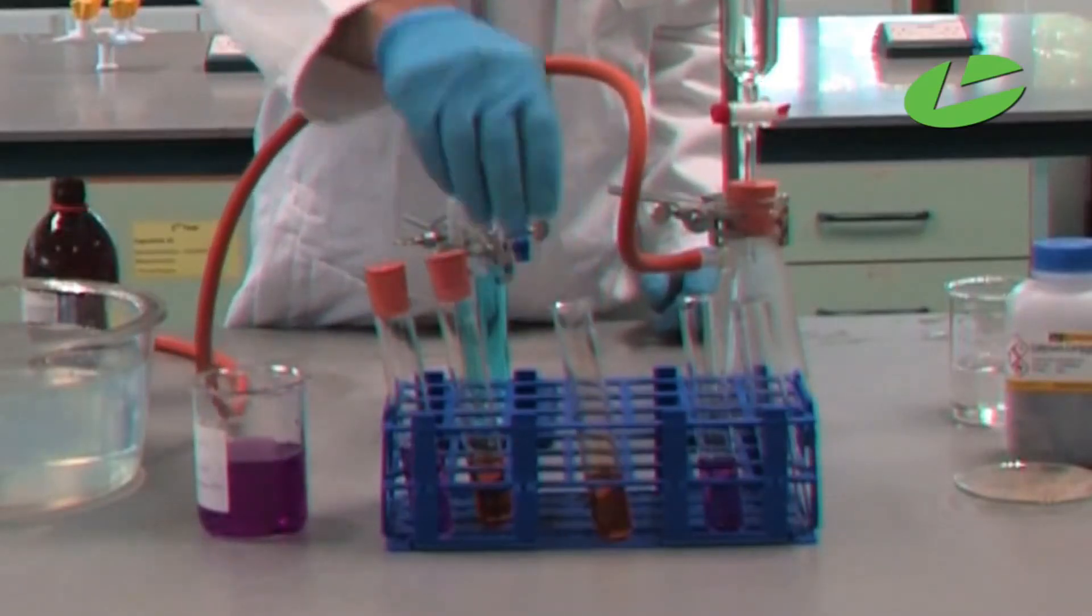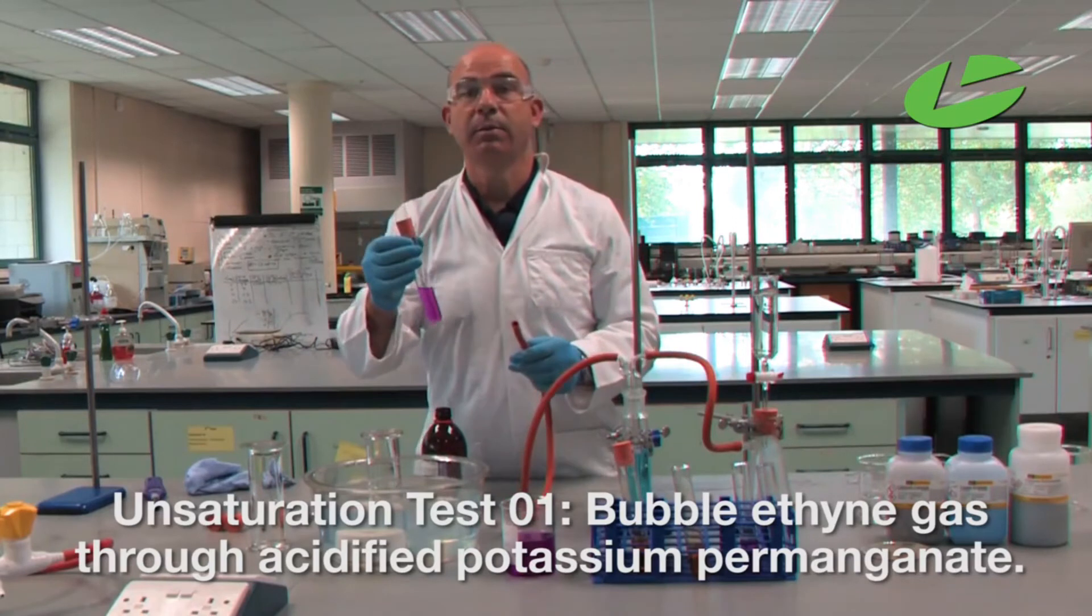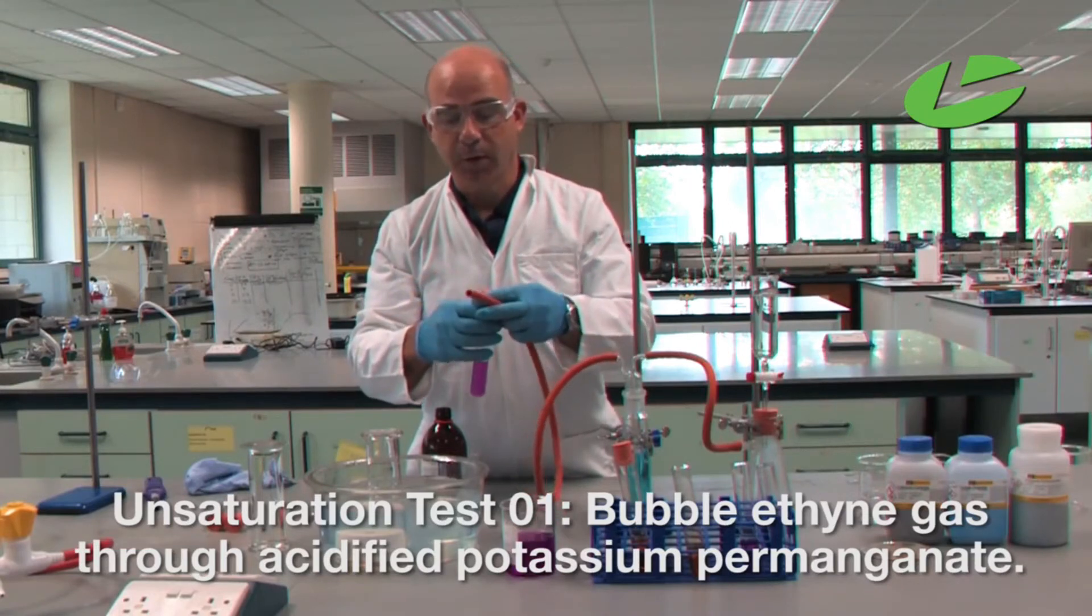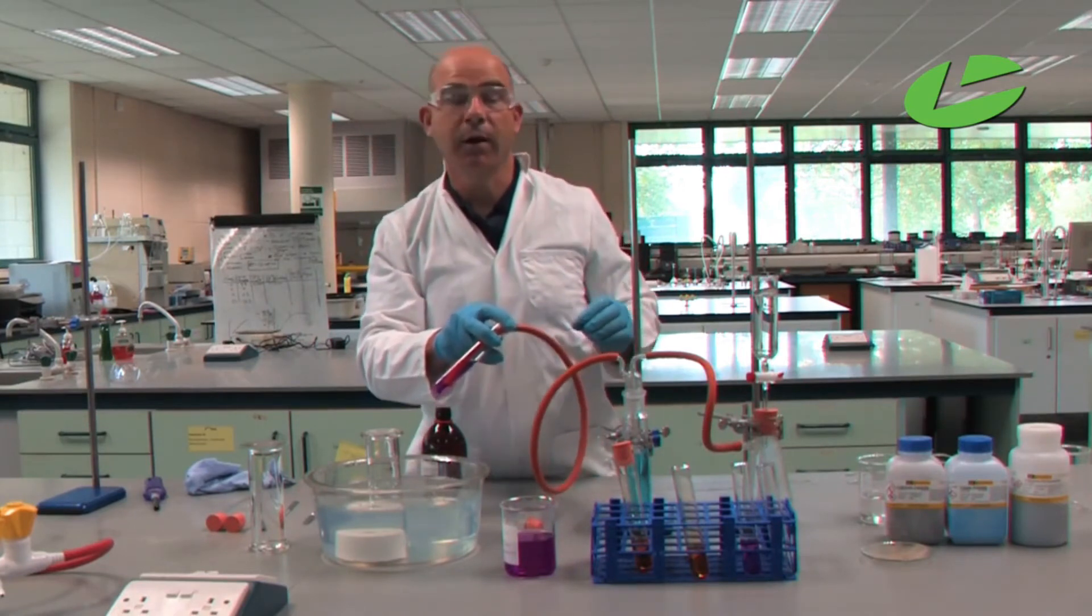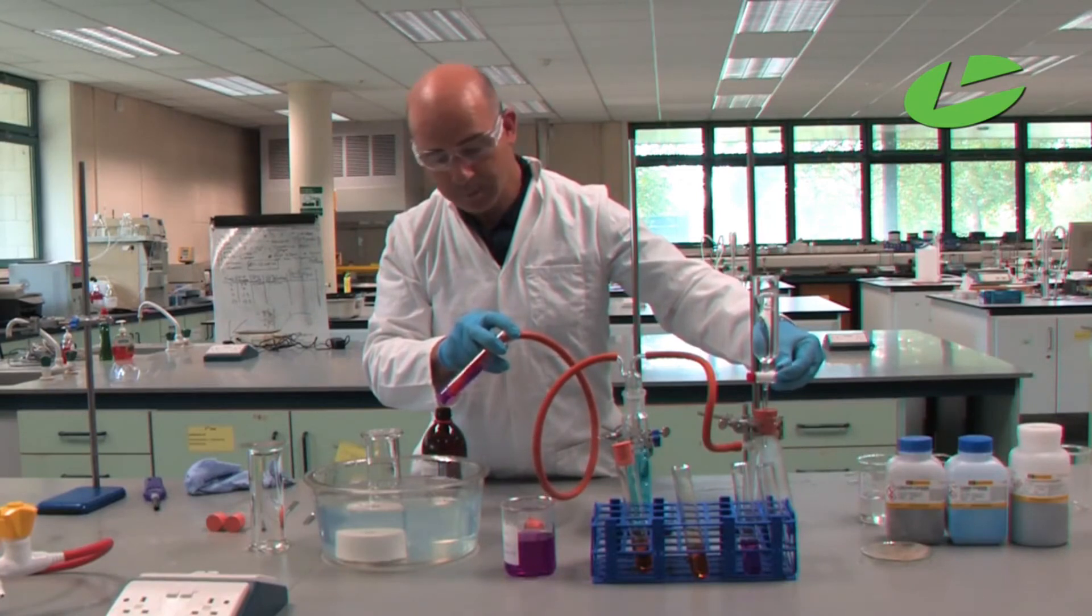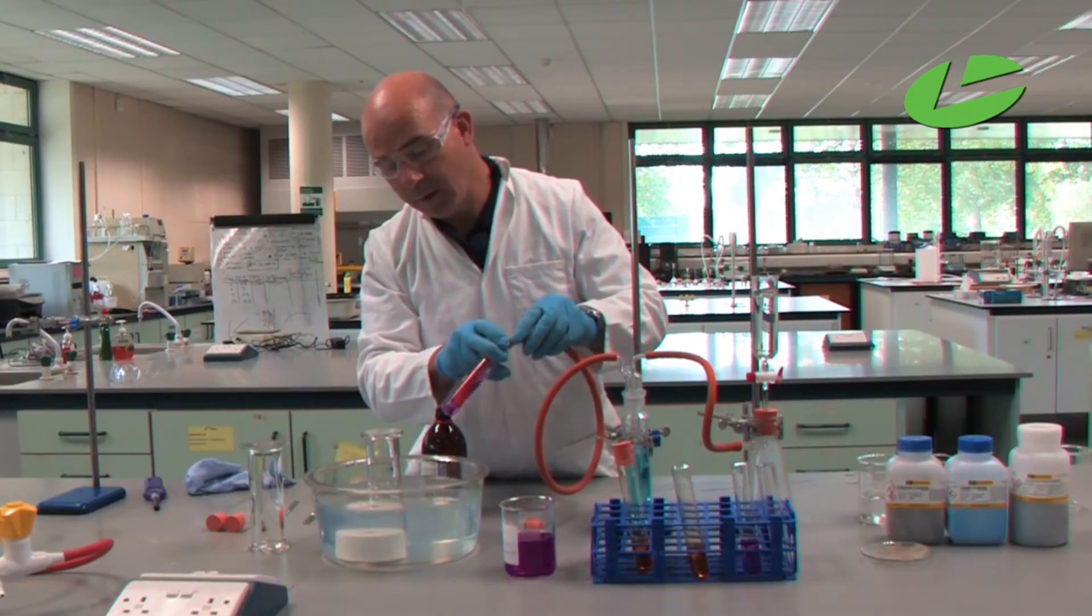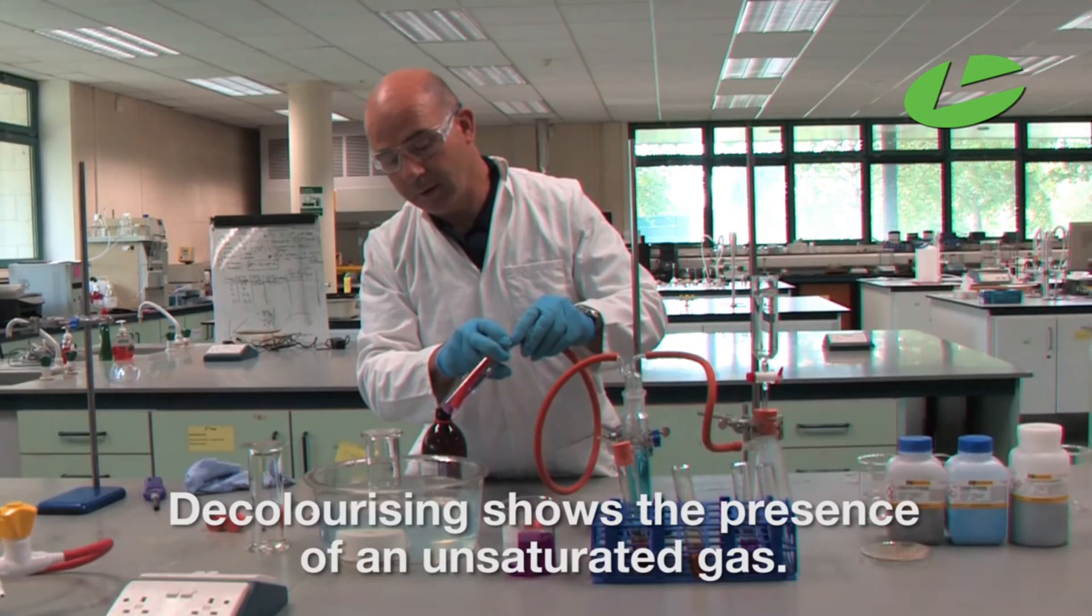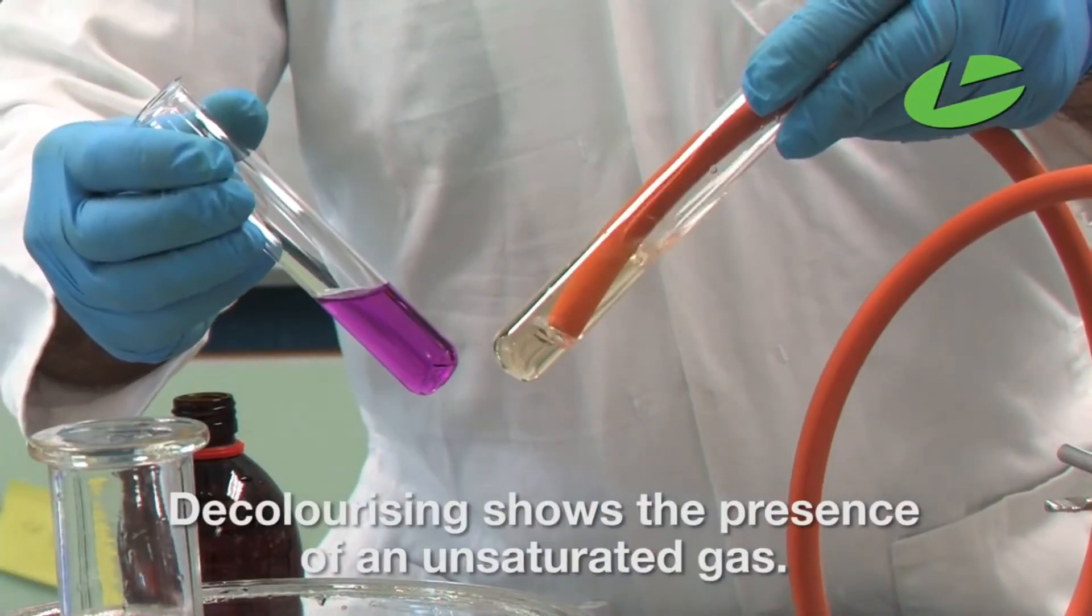In this decolorization test, bubble ethyne gas through the acidified potassium permanganate. The permanganate goes from +7 to +2 and gets decolorized. Open the test tube, put your tube into it, and if you have an unsaturated compound, you'll get decolorization. As the ethyne gas reacts with the permanganate, it turns colorless. You can see the advantage of having the before color ready - this is decolorizing in front of our eyes.